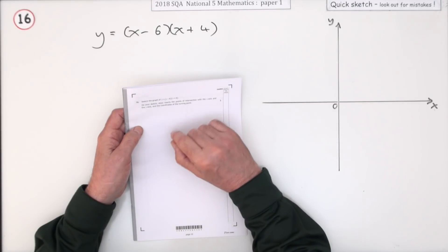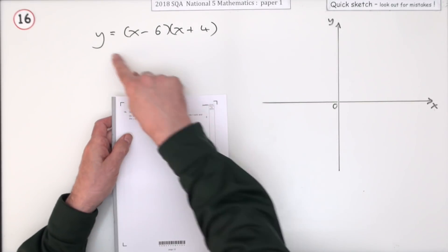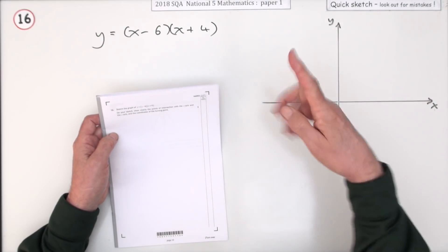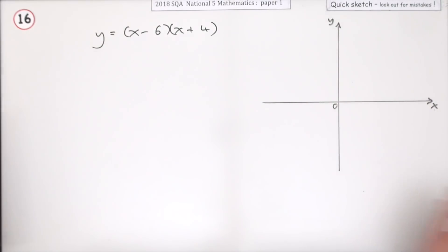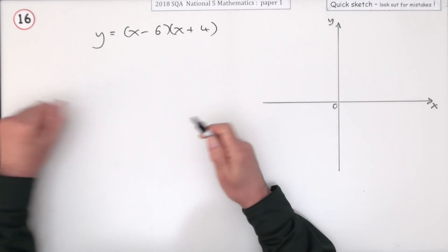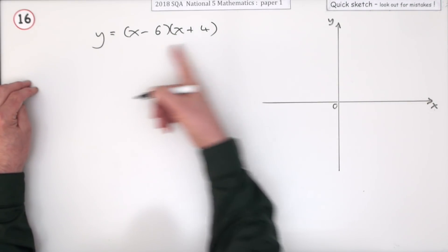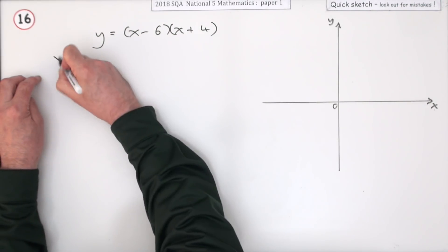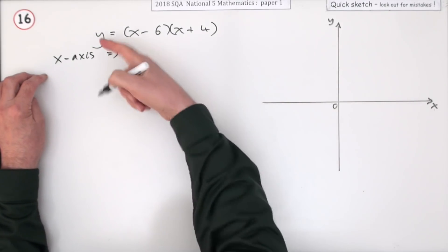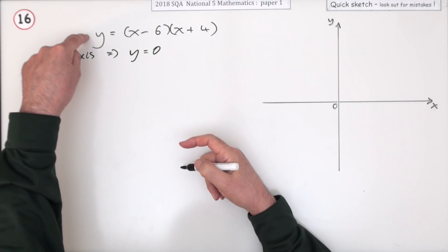Number 16 from paper 1 of the 2018 National 5 maths. There's only three marks here but it's asking you to sketch this graph and show where it cuts the x-axis, where it cuts the y-axis, and where its turning point is. That seems a little bit mean. We'll start off—usually start with the y-axis—but it's easier now that it's factorized to take the x-axis first. So it cuts the x-axis when y is 0, and since it's already been factorized equal to 0, you know the two numbers: either x is 6 if that bracket is 0, or x is negative 4.